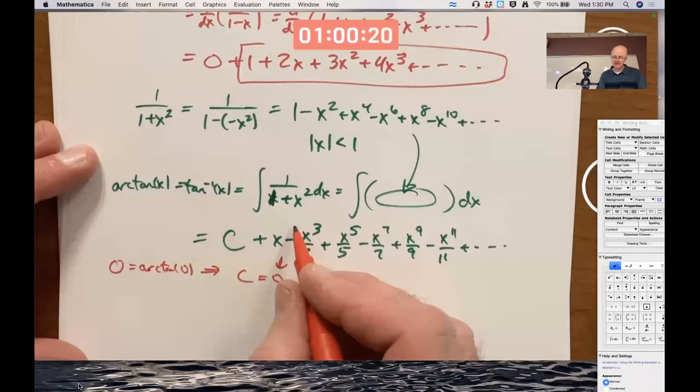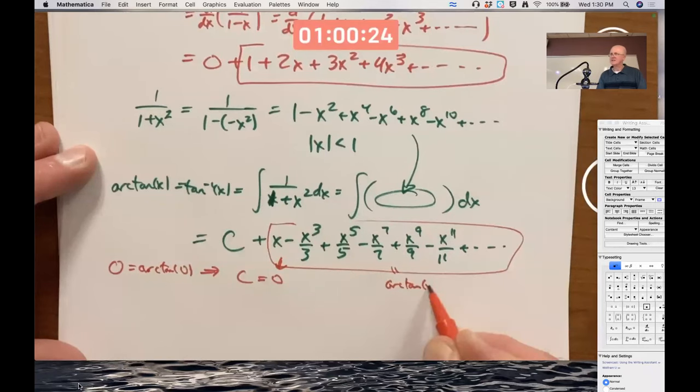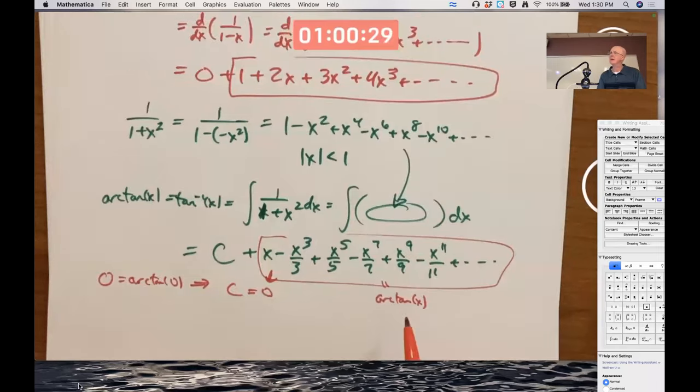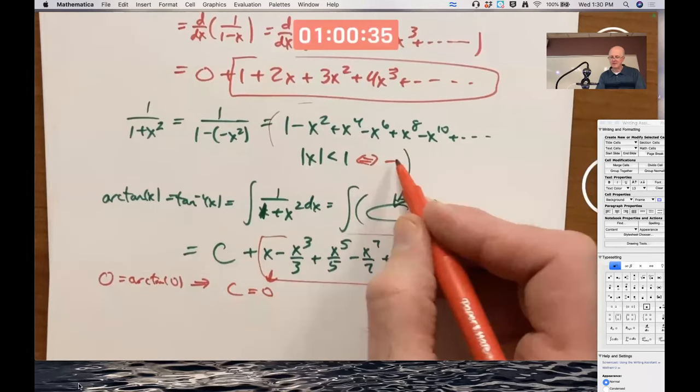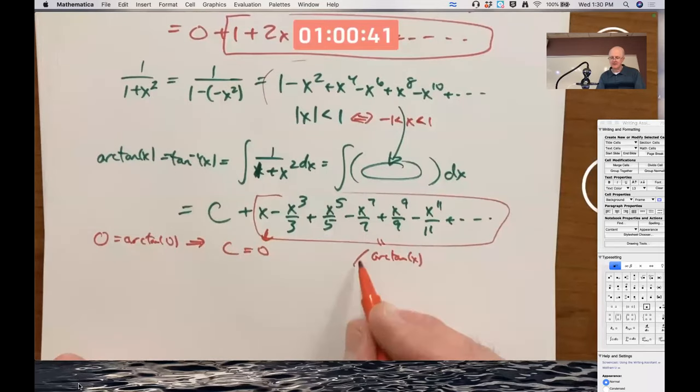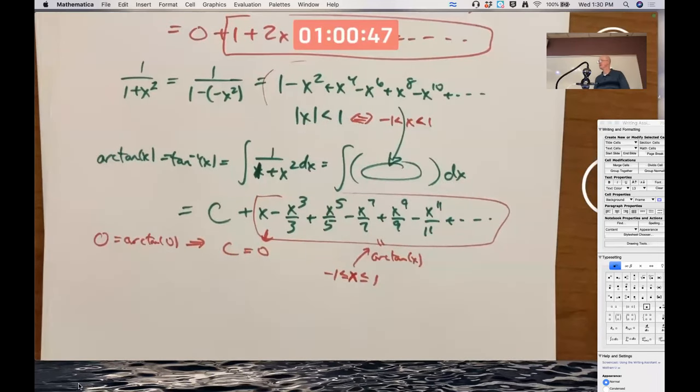And therefore, if you plug in zero on the right side, it implies c must be zero. So in fact, just this part equals the arc tangent. We also said that that happens to be true even at the endpoints, amazingly enough. With this series back up here, we did not get equality at the endpoints. It was an open interval. But amazingly, this one works even at the endpoints, though that takes proof that we're not doing.